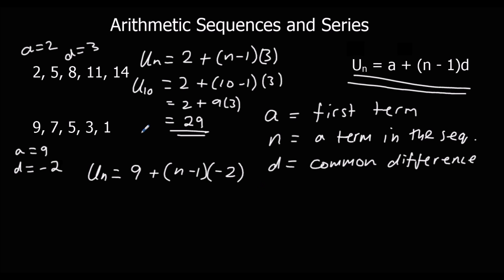Again, if I wanted to find the tenth term of this sequence, which I'll call u10. The tenth term, u10, is 9 plus 10 minus 1, times minus 2, which is 9 plus 9 lots of minus 2, which is 9 minus 18, which is minus 9. The tenth term of this second sequence is minus 9.